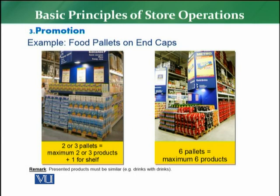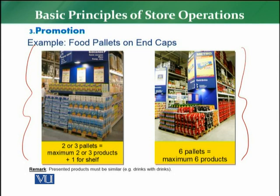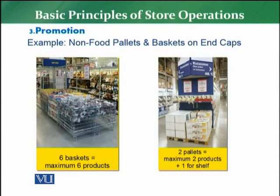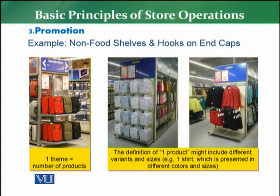For an end cap, the rule is to study the display with 2 to 3 pallets maximum and look at 2 to 3 products along with a shelf. In the second example, there are 6 pallets — every pallet is one product, meaning 6 pallets equals 6 products, and 4 pallets equals 4 products. This is the rule for display. For a non-food example with a product cage containing 6 baskets, there should be 6 different products, one product per basket.